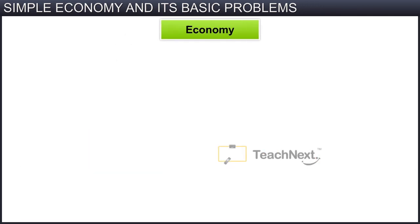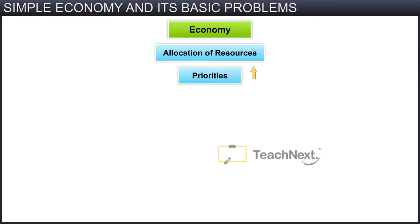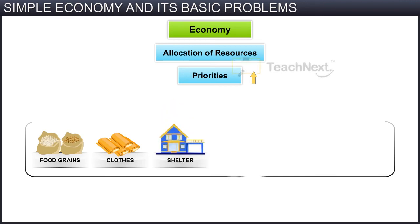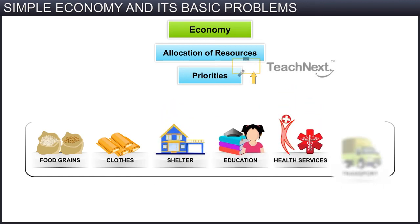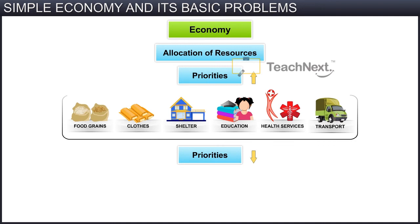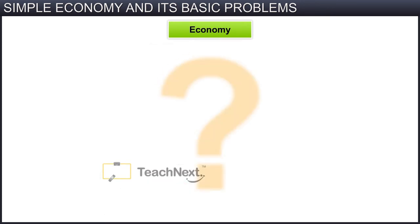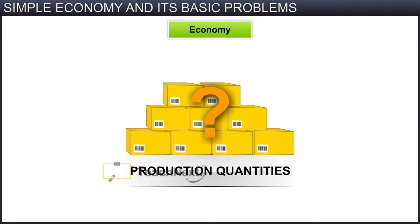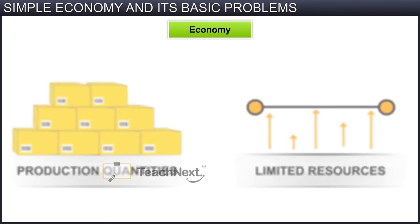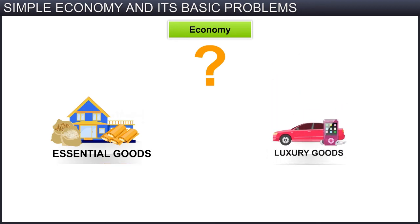Similarly, in an economy, the allocation of resources is decided by assigning priorities. For instance, higher priority is given to the production of food, clothes, shelter, education, health services, transport services, and other essential goods and services. Less priority is given to luxury goods like cars, iPods, and so on. The next question relates to production quantities: how much of a particular good should be produced utilising the available limited resources? In any economy, the question of whether to produce more essential goods or more luxury goods always arises.